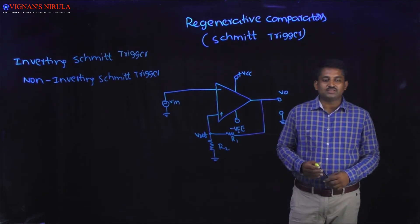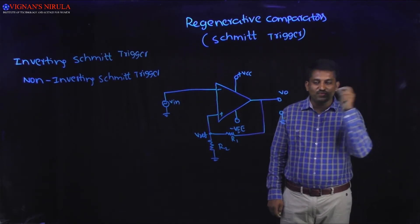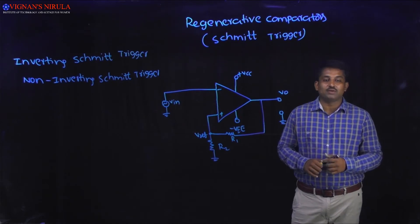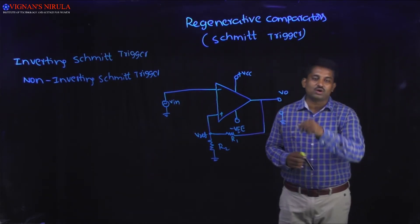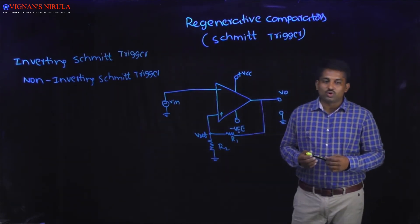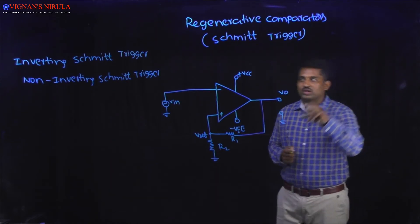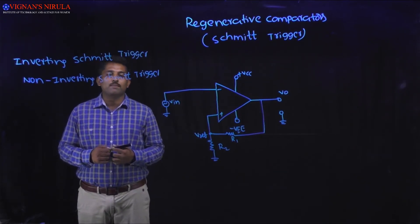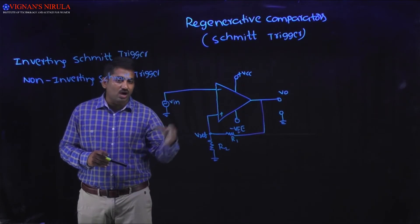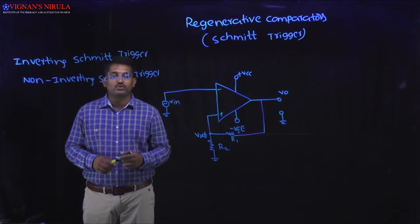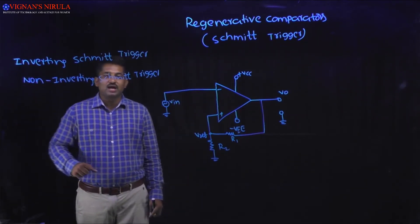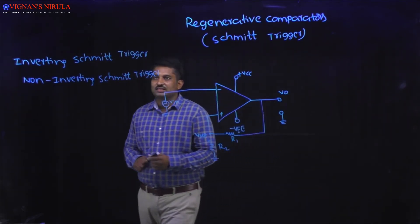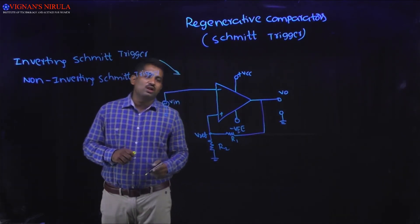The feedback is connected through resistor R1 to the non-inverting terminal, making the output in phase with the input — hence called positive feedback. Applying feedback to the positive input terminal makes it a non-linear application. To overcome the drawbacks of the comparator, we use regenerative comparators. There are two types: inverting Schmitt trigger and non-inverting Schmitt trigger.